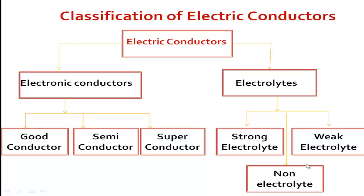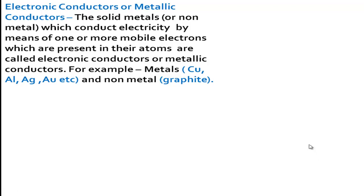Today we will know about these types of electric conductors. First, electronic conductors or metallic conductors: the solid metals or non-metals such as graphite which conduct electricity by means of one or more mobile electrons present in their atoms are called electronic conductors or metallic conductors. For example, copper, aluminium, silver, gold, and the non-metal graphite.